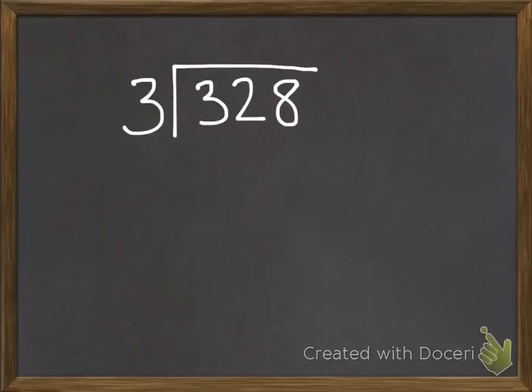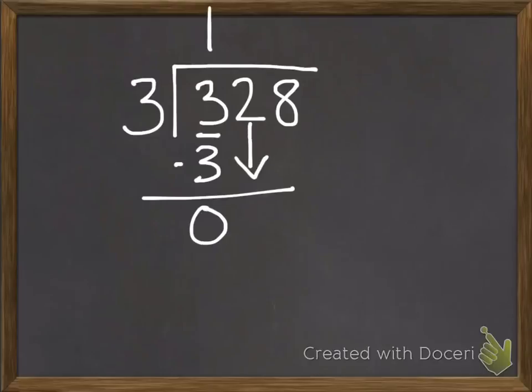This next problem says 328 divided by 3. So let's take a look at the first number in our dividend, which is a 3. If I have 3 apples, can I put those into a group of 3? Of course, you can have one group. So 3 times 1 equals 3. You're going to subtract and get 0. Your next step is always to drop down the next number in your dividend, which is a 2.